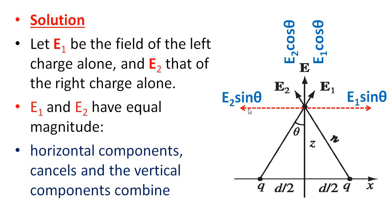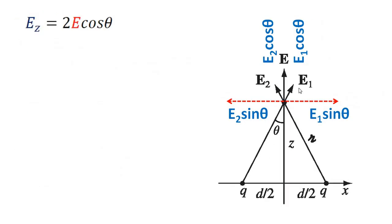The horizontal components, that means the sin theta components, cancel. The vertical cos theta components combine. That is, the electric field E in the z direction is equal to 2·E·cos theta.